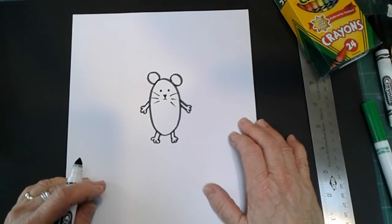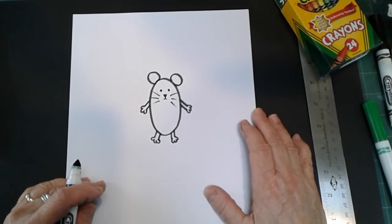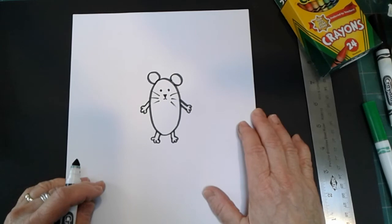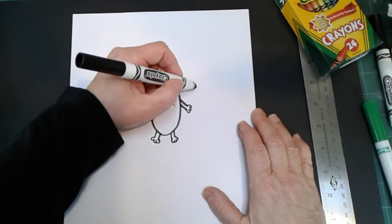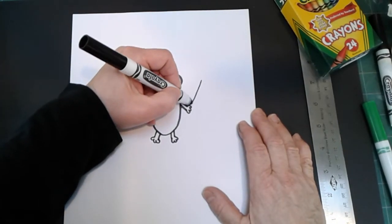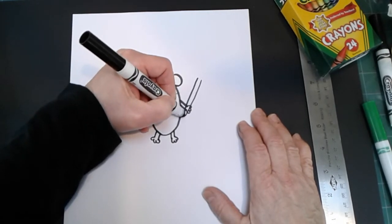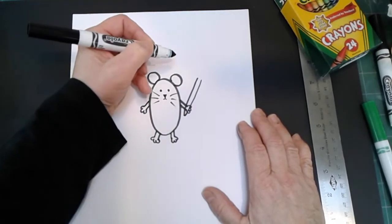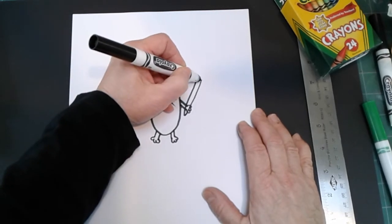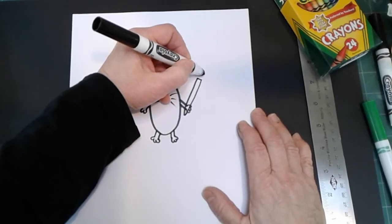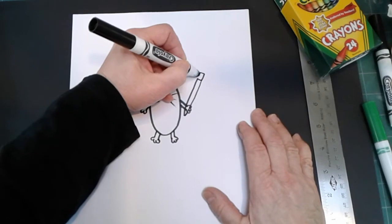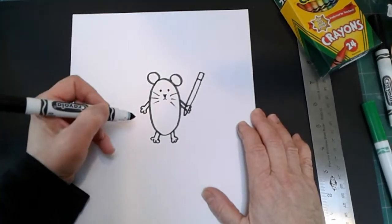Here's our little mouse. Now, just for fun, let's put a brush in his hand. So I'm going to make two lines like this. They're going to come to a point over here.